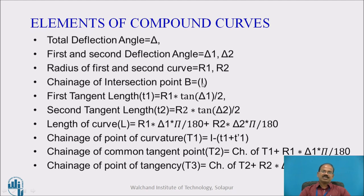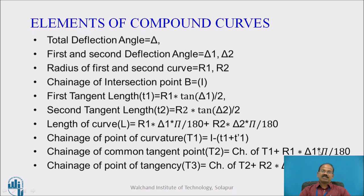The chainage of intersection point B is assumed to be I, which can be any real number. The first tangent length t1 equals R1 tan(delta1/2), where R1 is the radius of the first curve and delta1 is the first deflection angle. The second tangent length t2 equals R2 tan(delta2/2). The length of the first curve is R1·delta1·π/180, the second curve length is R2·delta2·π/180, and together they give the combined length L. The chainage of point of curvature T1 equals the chainage of the intersection point minus (t-dash-1 + t1), and the chainage of the common tangent point T2 equals the chainage of T1 plus R1·delta1·π/180.